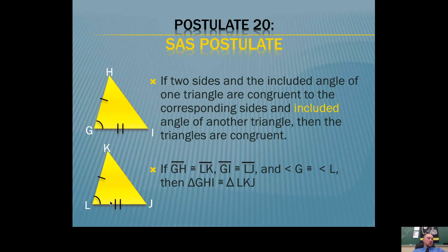We needed that terminology so we could use the Side Angle Side postulate. If you have two triangles with pairs of congruent parts as shown, those two triangles must be congruent — it's impossible to make two different triangles with these pairs of congruent parts in this order. Notice how we have a pair of congruent sides, a second pair of congruent sides, and a pair of congruent angles. Where those congruent angles are is really important: they're included — in between the pairs of congruent sides. That's why the A is in between the S's. Anytime you see this arrangement, the two triangles are congruent.